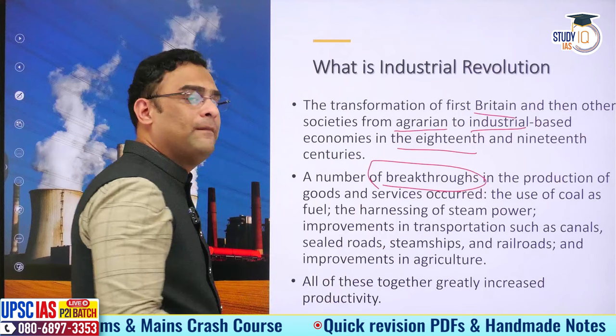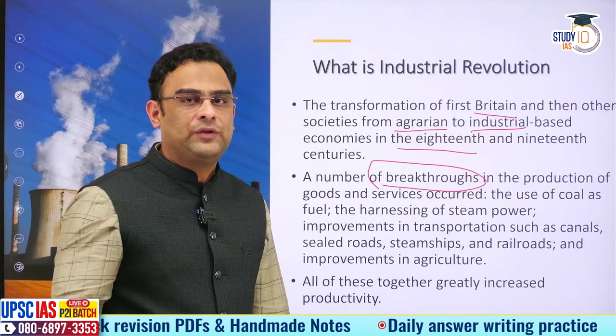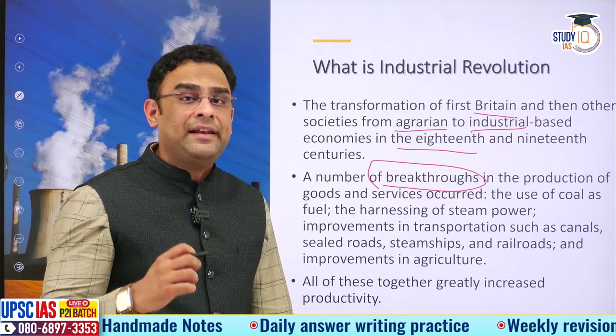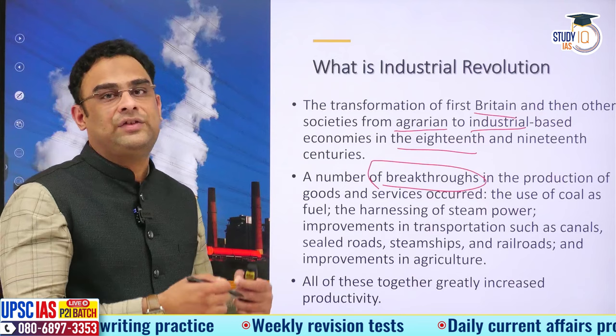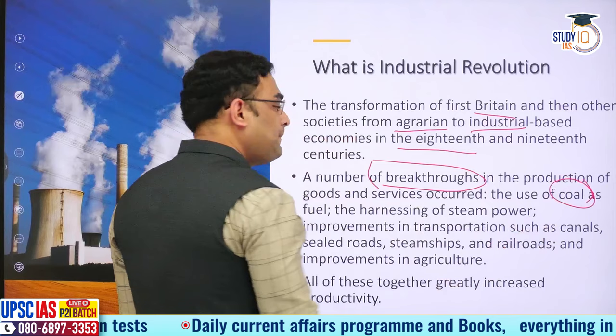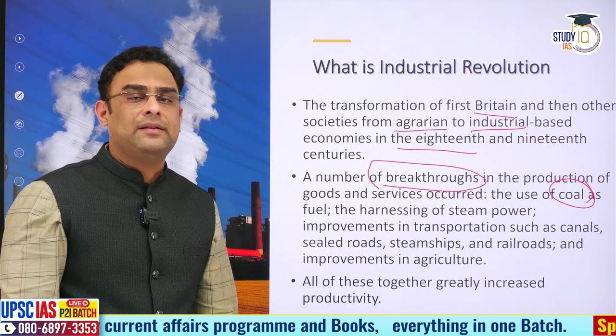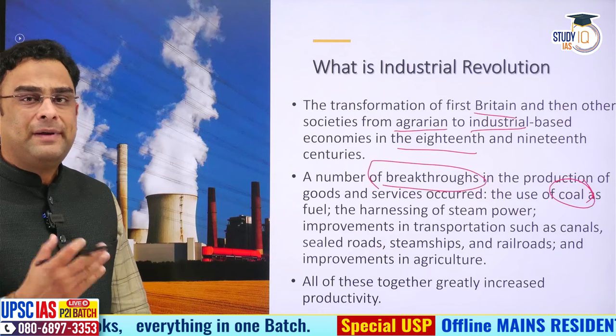Industrial revolution was possible because of breakthroughs in several production technologies. Previously, it was human and animal power that was harnessed to produce goods and services. The technological breakthroughs in Europe in the 17th and 18th century helped transform this process from human or beast dominated to machine dominated. The first major breakthrough was the use of coal as fuel. Coal was always known to mankind but its high calorific value could never be exploited on a great scale — industrial revolution enabled that.